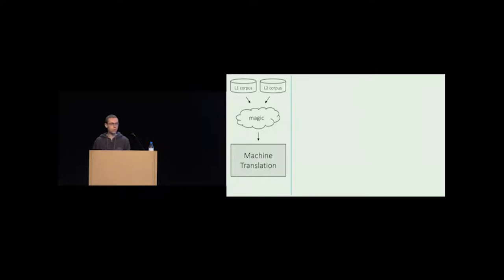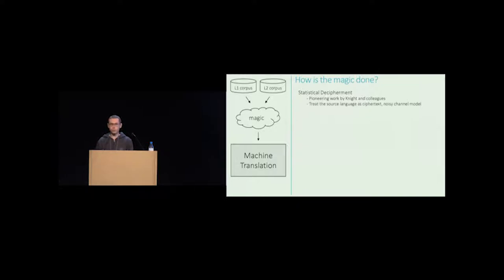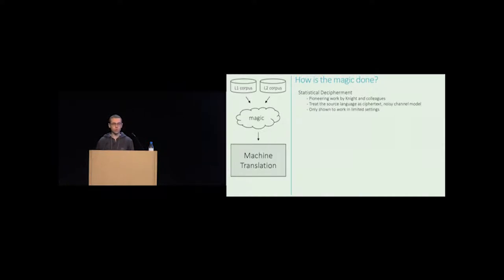Of course, we are not the first people trying to solve this problem. There is a relatively large body of work in statistical decipherment by Kevin Knight's group among others, which tackles this problem by treating the source language as ciphertext and modeling its generation through an noisy-channel model. Unfortunately, this approach was only shown to work in rather limited settings, where most of the evaluation was carried out at the word level.